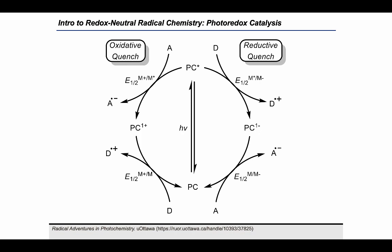Over the past decade, photoredox catalysis has become a mainstay in the development of new carbon-carbon coupling methodology. A typical catalytic cycle consists of excitation of the photocatalyst by a photon, followed by either oxidative quenching with an acceptor molecule or reductive quenching with a donor molecule. In a redox neutral sense, a closed catalytic cycle involves generation of a radical intermediate via quenching of the excited state, followed by an addition reaction, where the next intermediate reacts again with the photocatalyst to give the desired product and regenerate the ground state.